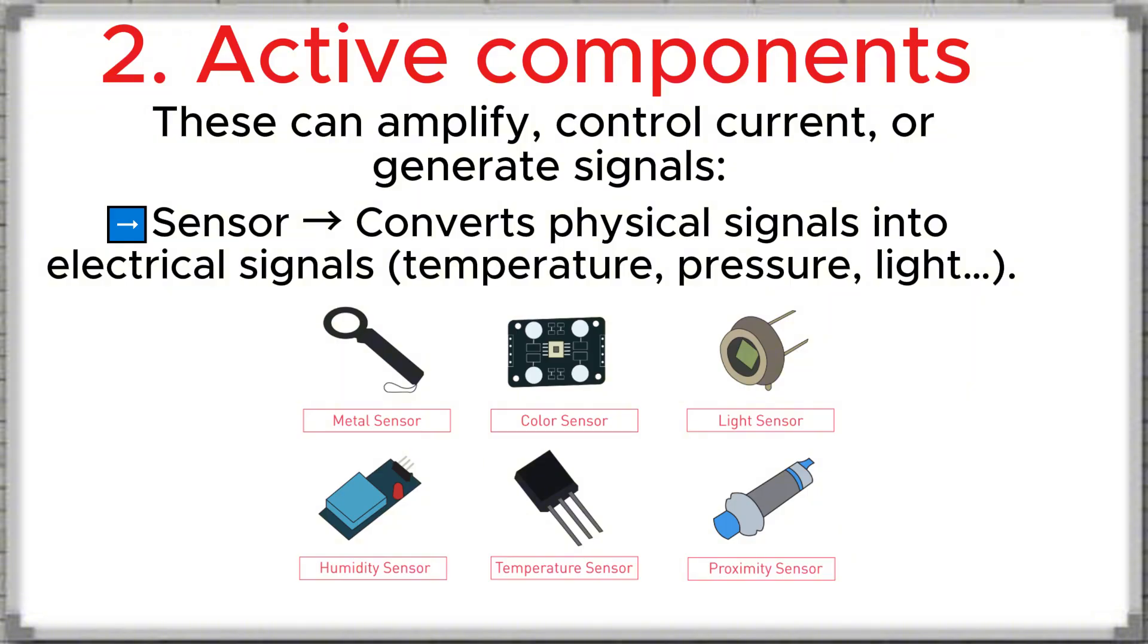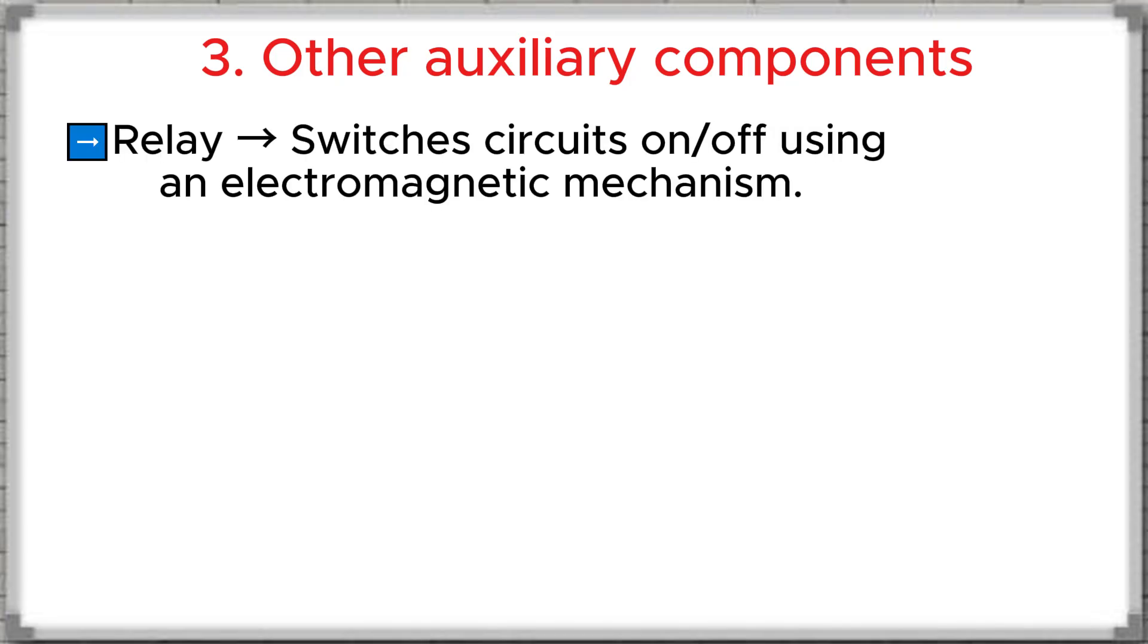Sensor converts physical signals such as temperature, pressure, or light into electrical signals. In addition, there are other auxiliary components. Relay switches the circuit on or off using an electromagnetic mechanism.